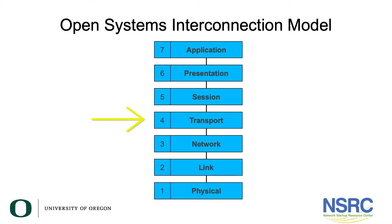Layer four adds the ability to address data to a specific process running on a machine. Layer four's job can also include taking large amounts of data, breaking them up into smaller datagrams that are suitable for layer three to deliver, and to reassemble them, and also to retransmit data when there's an error.